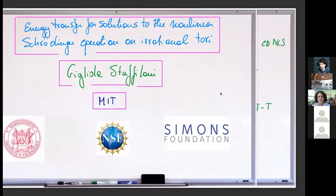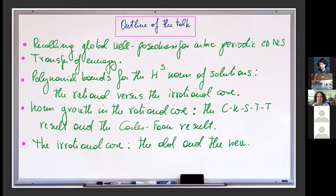I'm going to first start with a list of topics as an outline of the talk. I'll recall briefly global well-posedness for the equations I will consider, which is going to be cubic NLS in 2D. Then I'll talk about the transfer of energy — I have to thank both Montalte and Maspero for already having done a great job reminding us what these concepts are. Since we talk about transfer of energy, as explained in those previous two talks, one is reduced to estimating the asymptotics of the Sobolev norms of the solutions, both upper bounds and lower bounds.